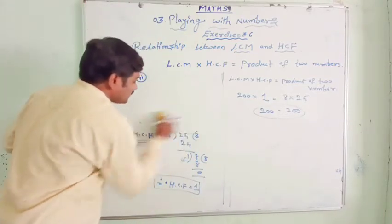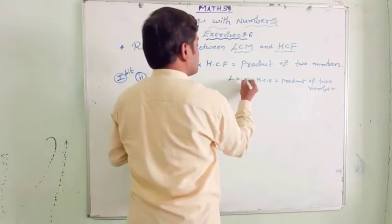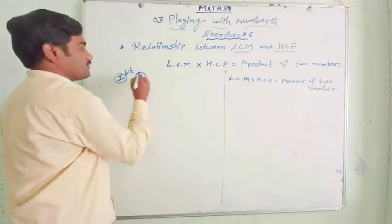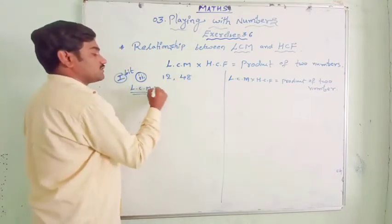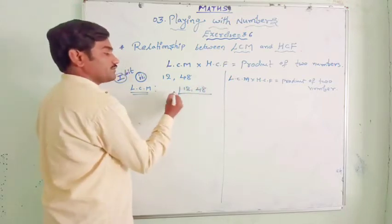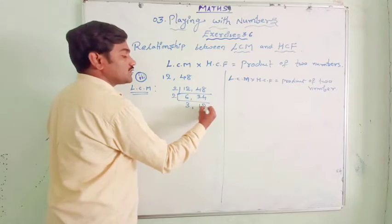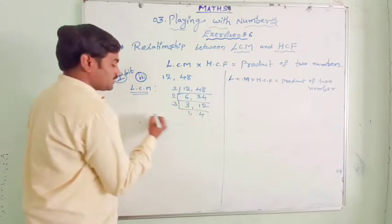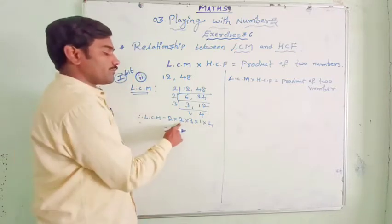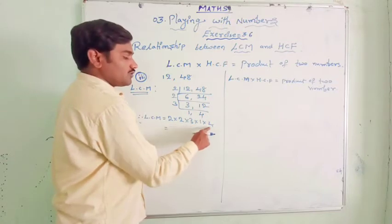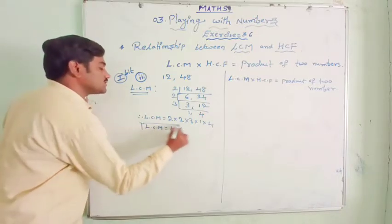Let us also go for the third problem from this exercise, which is 12 and 48. Let us find the LCM first by the division method. So for 12 and 48: 2 × 6 = 12, 2 × 24 = 48; 2 × 3 = 6, 2 × 12 = 24. LCM = 2 × 2 × 3 × 1 × 4 = 48. Therefore LCM = 48.